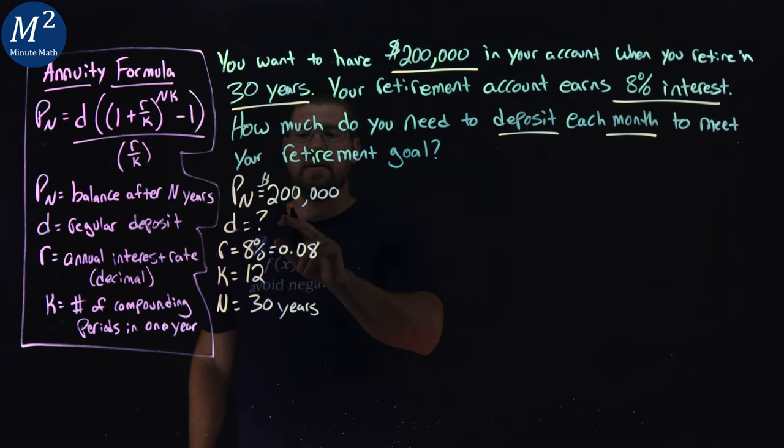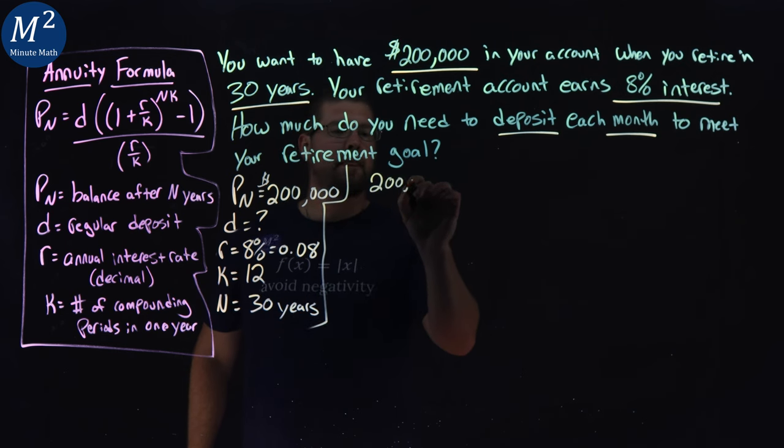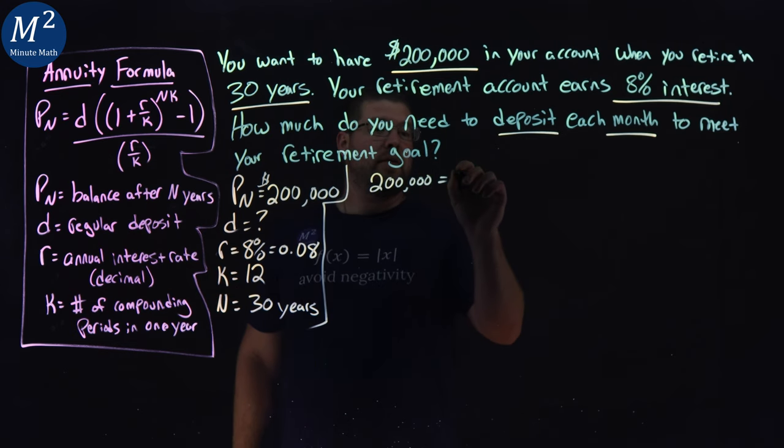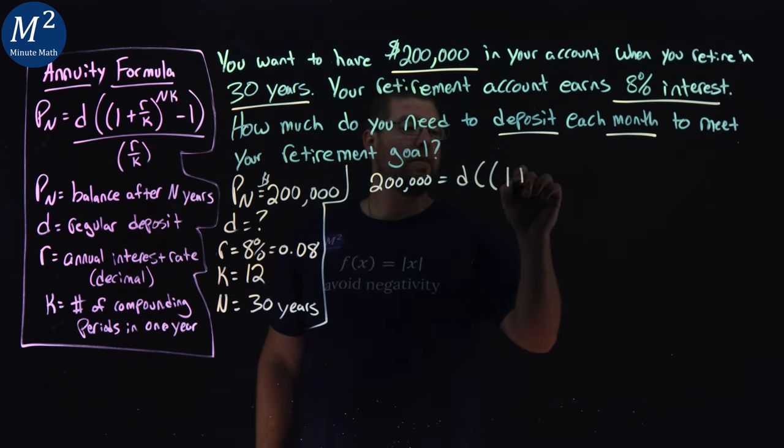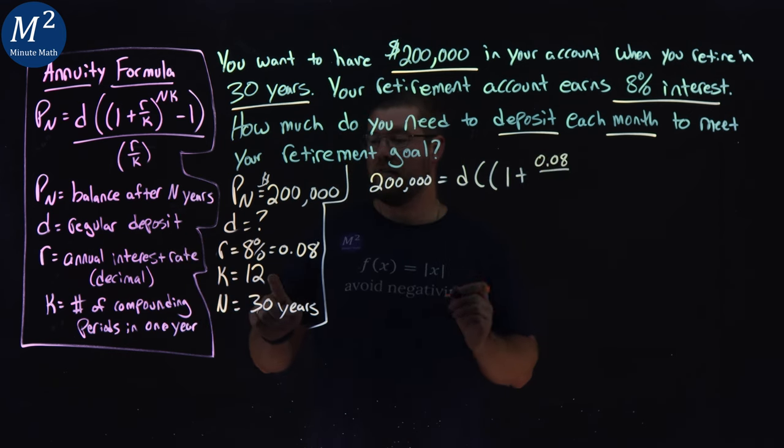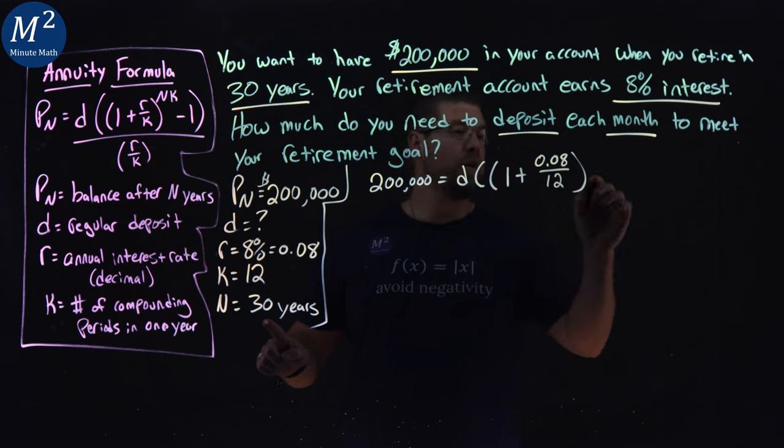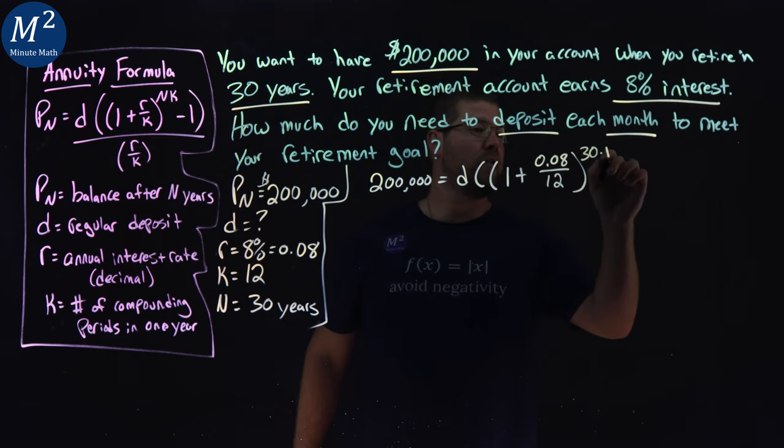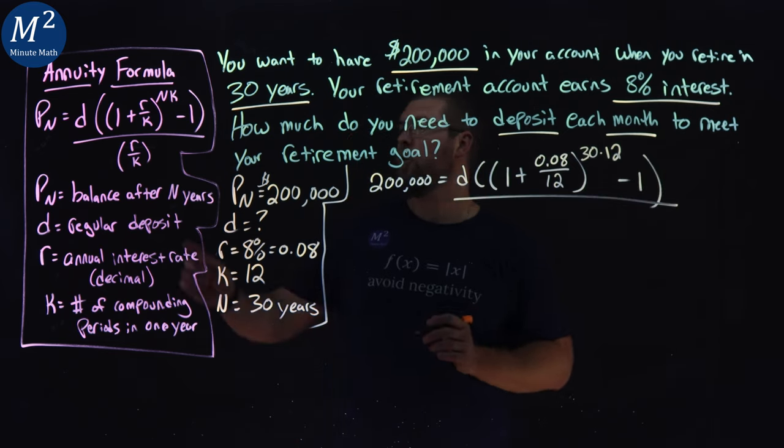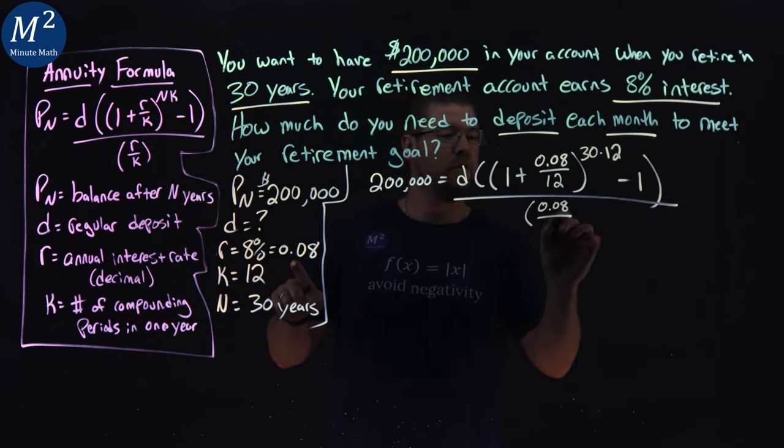So P sub N, first part, is 200,000. That's what we want to have. We don't know our deposit amount, D, two parentheses. We have 1 plus our R value, which is 0.08 over our K value, which is 12, to the exponent power of N times K, N being 30 years, times a K of 12. Minus 1, close the last parentheses. All over R over K, R 0.08 over K, which is 12.